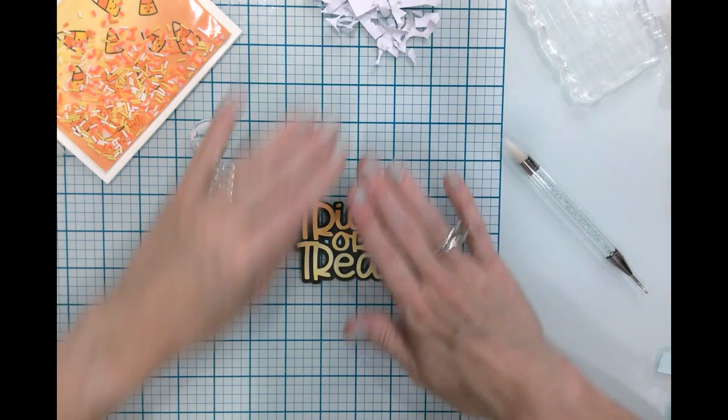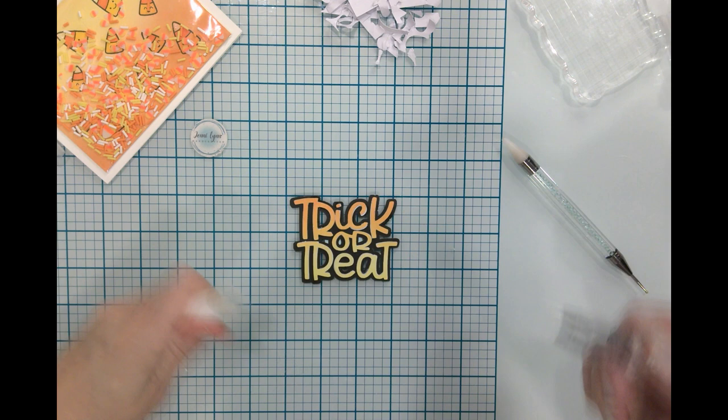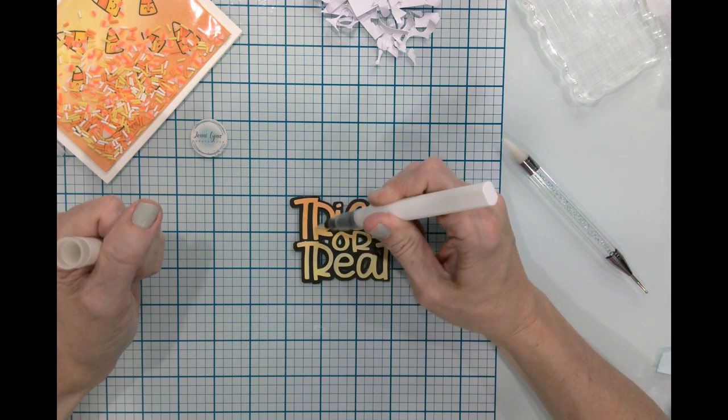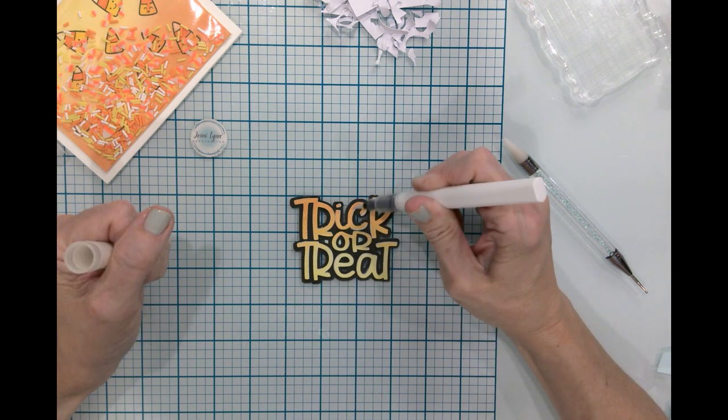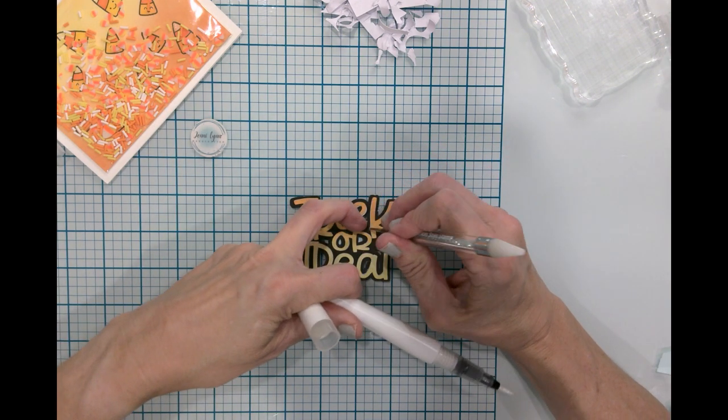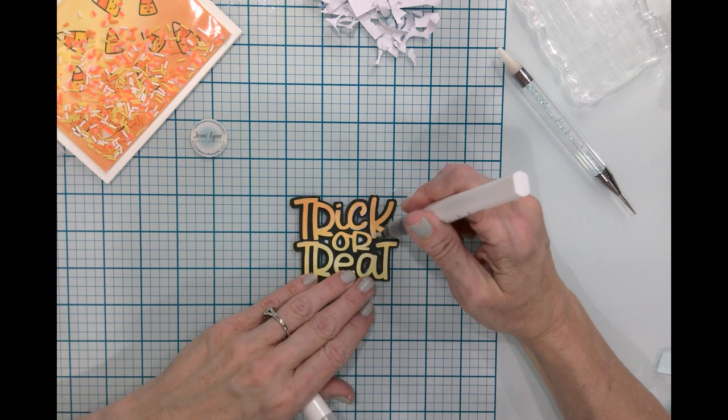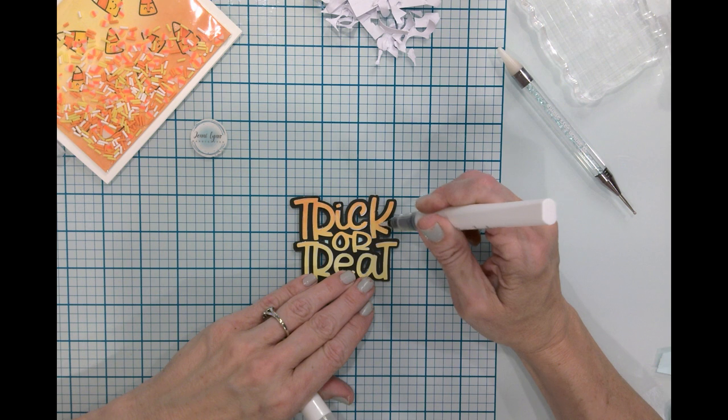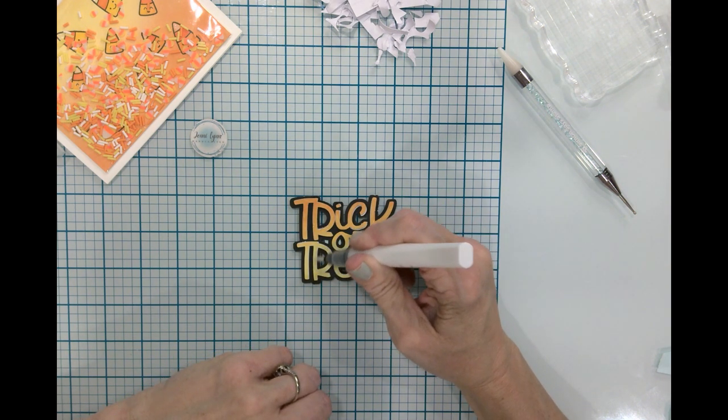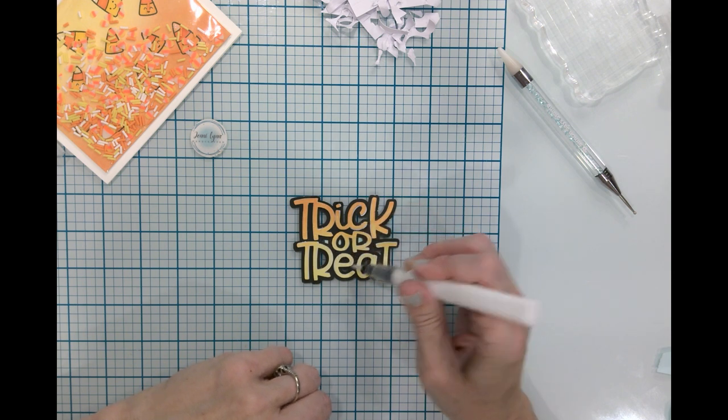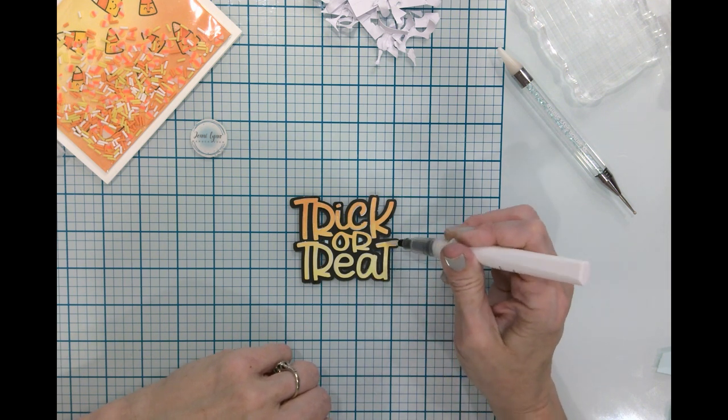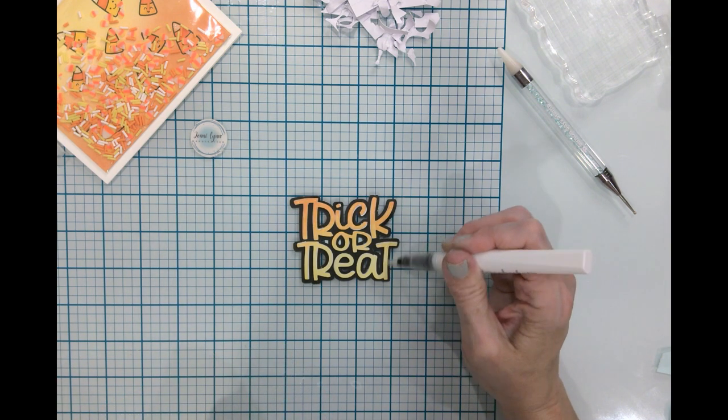Now, while I'm waiting for this glue to dry a little bit, I'm going to bring back out my shimmer pen. I'm just going to go along my trick or treat. Now, something I noticed is like here with my C, you can see the layer, but I'm not too worried about that. That's okay. It is a handmade card. Handmade cards have little imperfections in them, and that's okay. This is going to be so fun when it's done. This is a great way to add sparkle to your cards, and I just think sparkle is so fun.